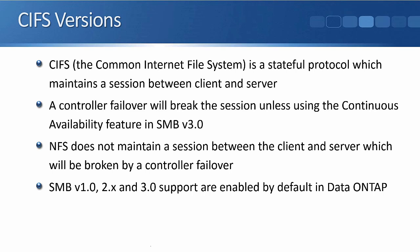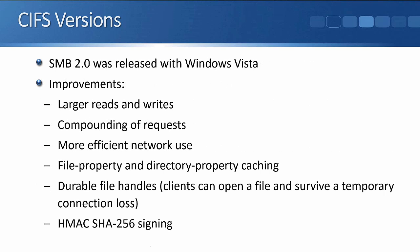SMB versions 1.0, 2.x, and 3.0 support are enabled by default in Data ONTAP. SMB version 2.0 was released with Windows Vista. Improvements over version 1 include larger reads and writes and compounding of requests, meaning it can send multiple requests in the same message. Because of these two things, it has less overhead, giving us more efficient network use.